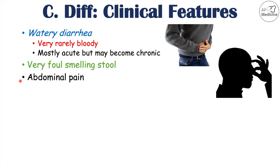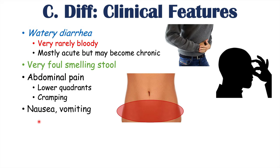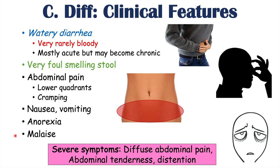Abdominal pain is another important clinical feature — occurring in the lower quadrants as a cramping pain. Some patients may have nausea and vomiting, though that is less likely. They can also have anorexia — no appetite — and malaise, a general feeling of being unwell. Severe symptoms are red flags for a more severe presentation: these include diffuse, often severe abdominal pain, abdominal tenderness, and abdominal distension, which indicate a more serious complication from a C. difficile infection.